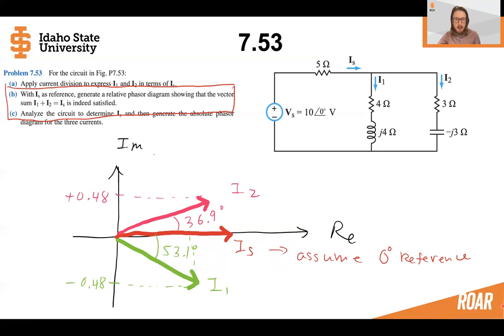I1 and I2 can be represented here in green and in purple. We can see that in reference to the current IS, I1 is minus 53.1 degrees below the real axis and I2 is 36.9 degrees above the real axis. And so these angles are relative to IS.